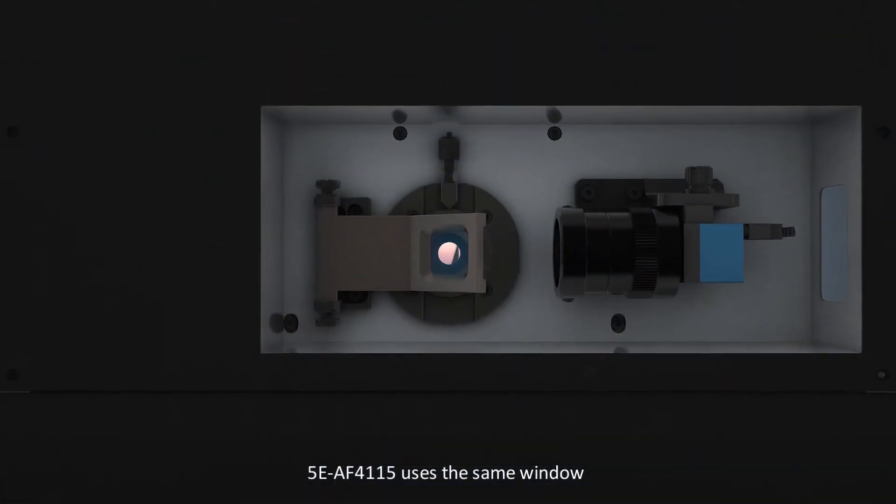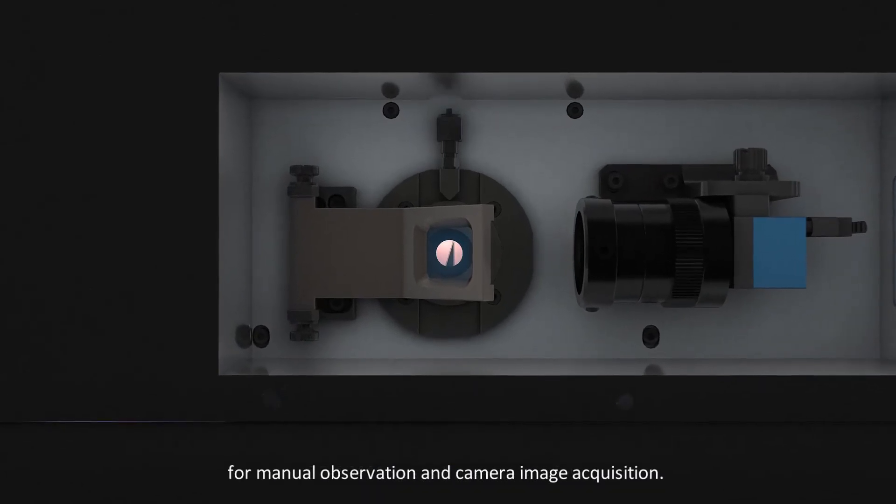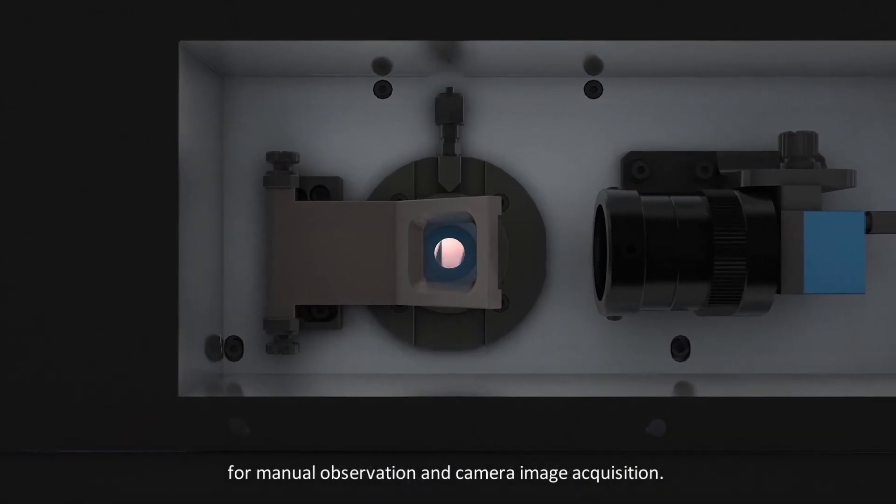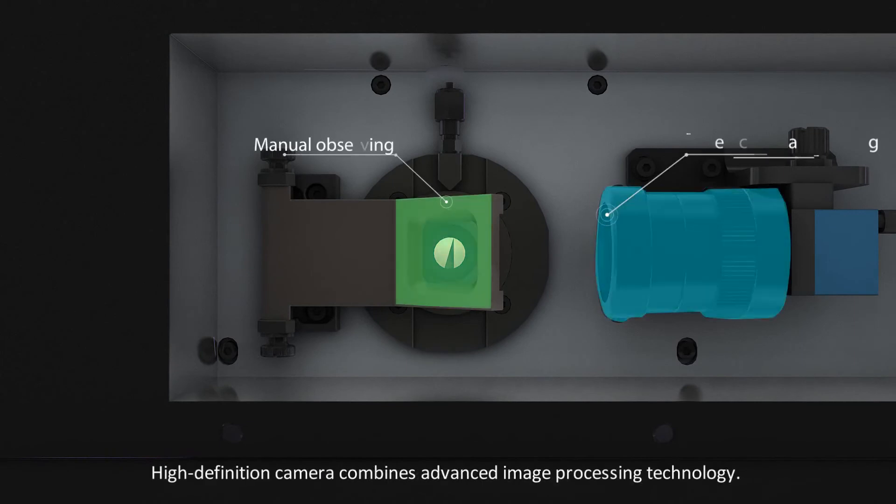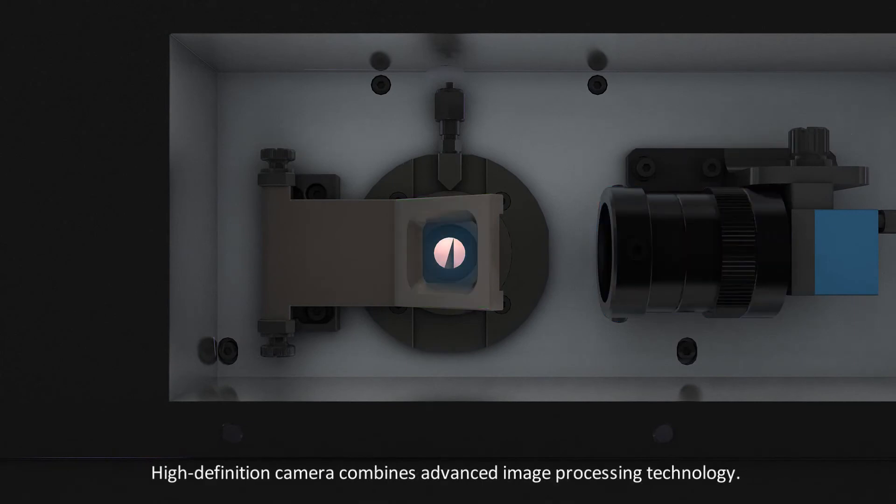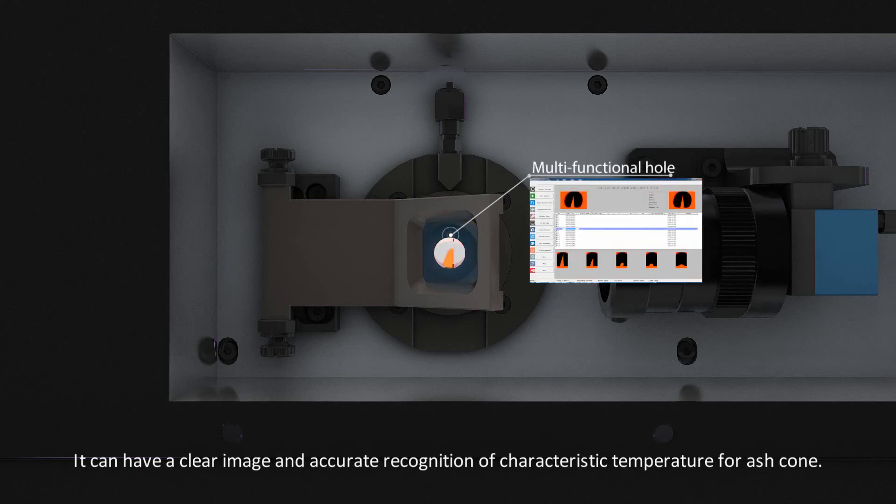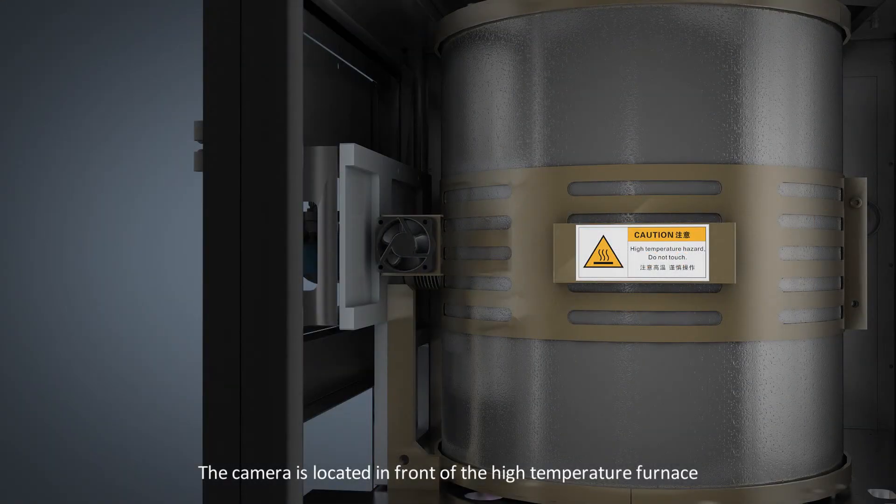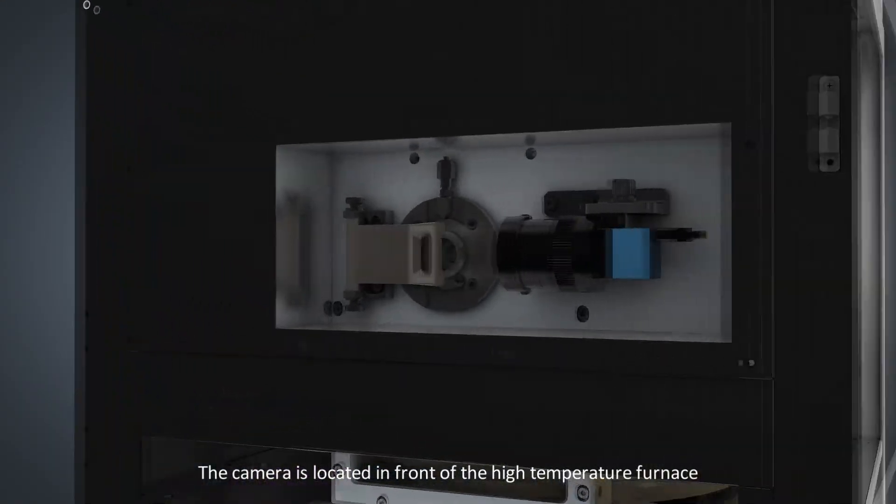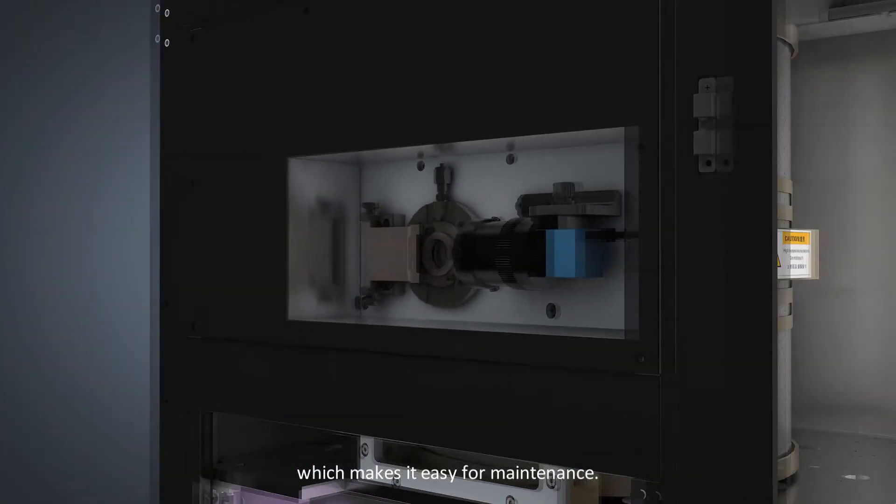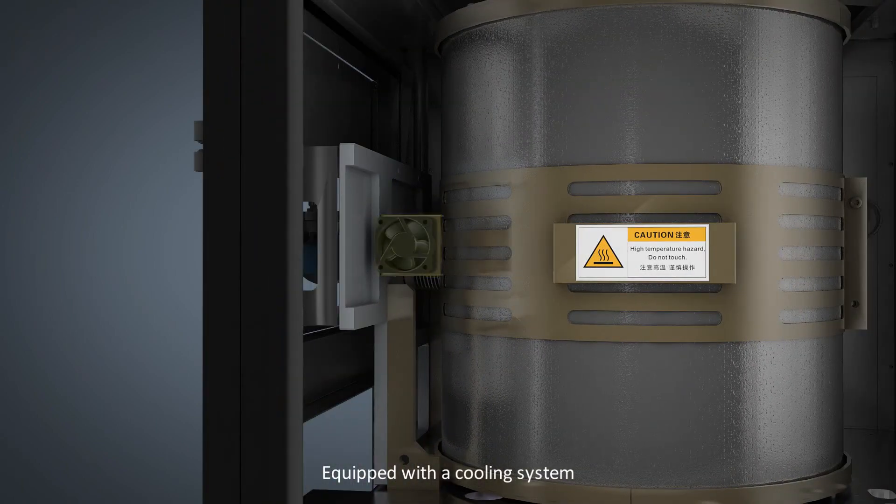The 5E AF4115 uses the same window for manual observation and camera image acquisition, ensuring consistent images. A high definition camera combines advanced image processing technology for clear imaging and accurate recognition of characteristic temperatures for the ash cone. The camera is located in front of the high temperature furnace for easy maintenance and is equipped with a cooling system to ensure stable operation and long service life.